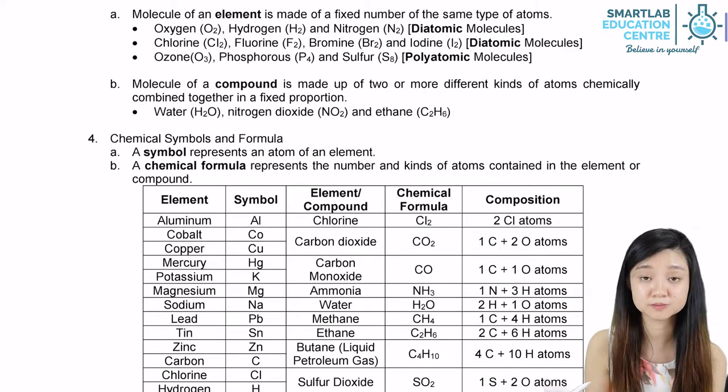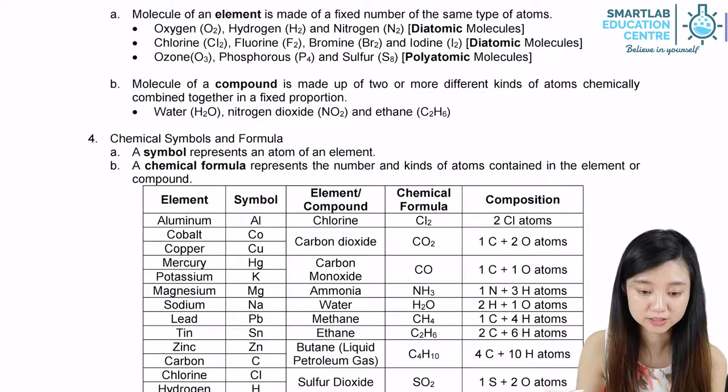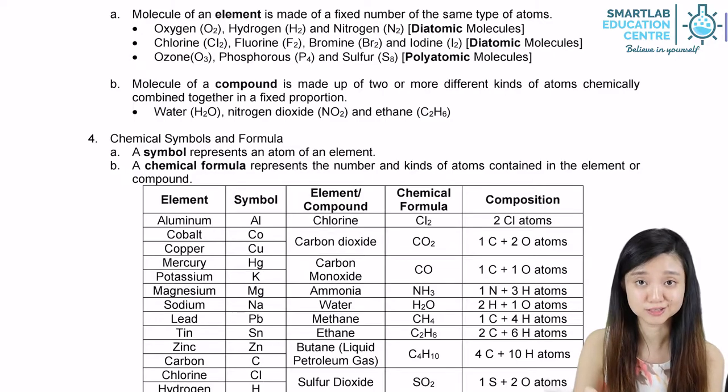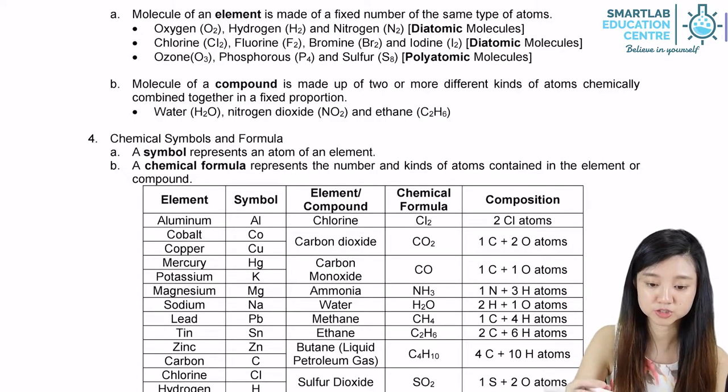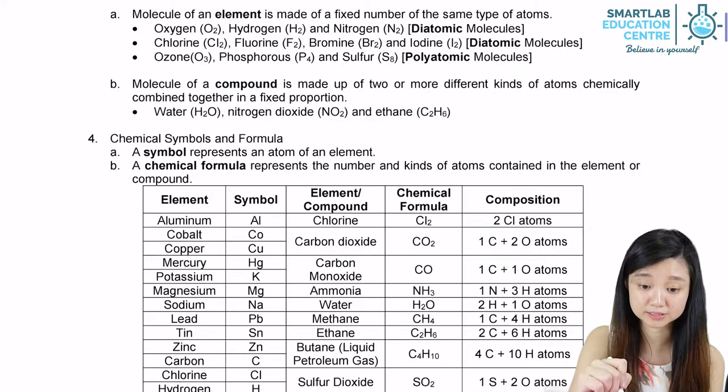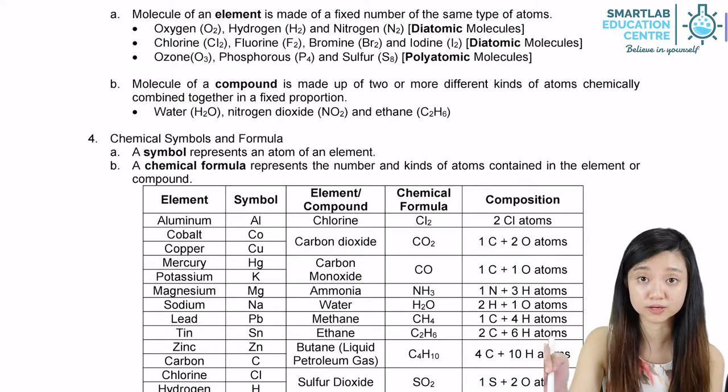Next, let us look at chemical symbols and formulas. As we learned earlier, a symbol represents an atom of an element. In order to write the symbol, we have to make sure that the first letter is a capital letter, while the second letter is in lower case.